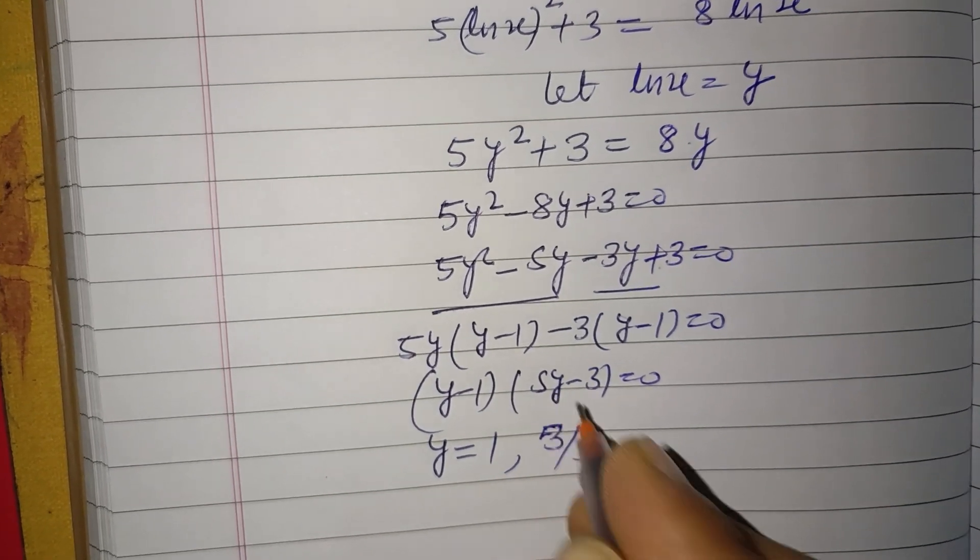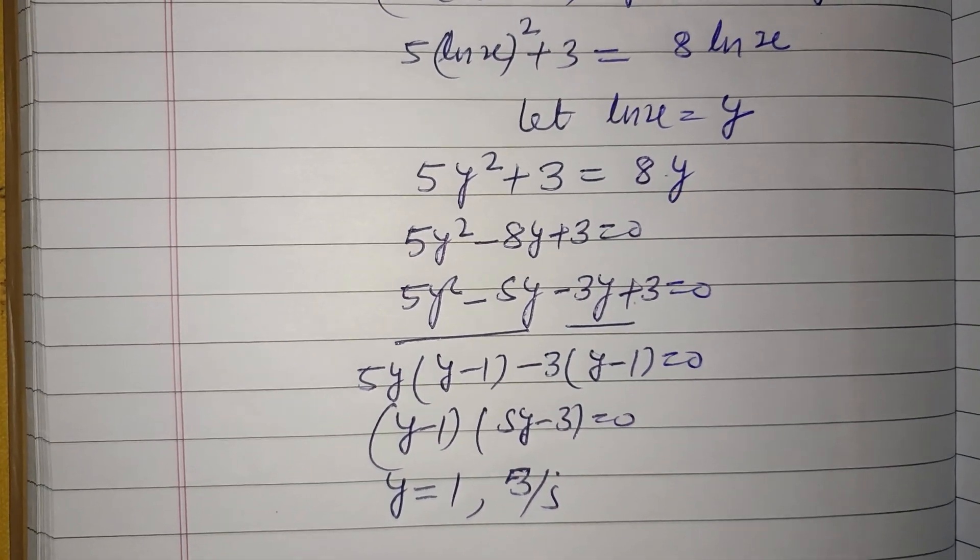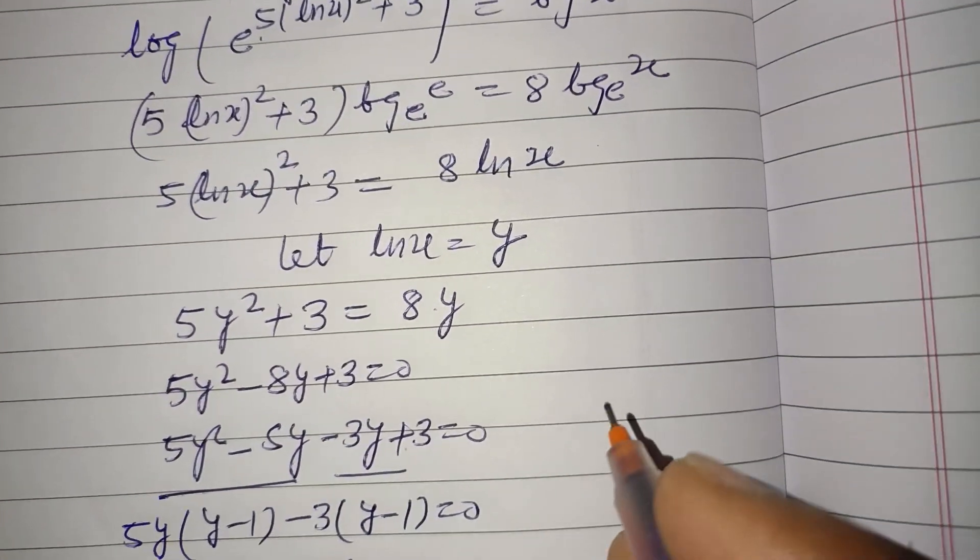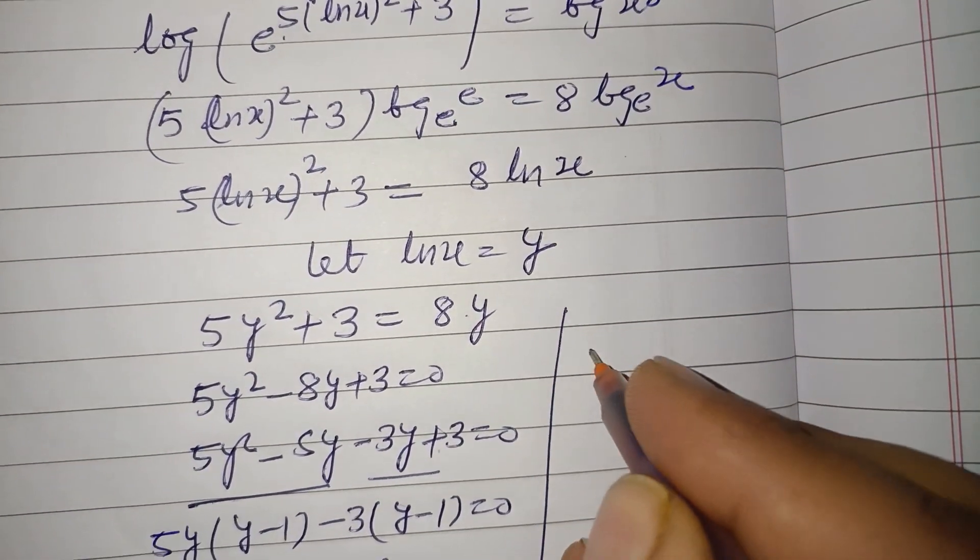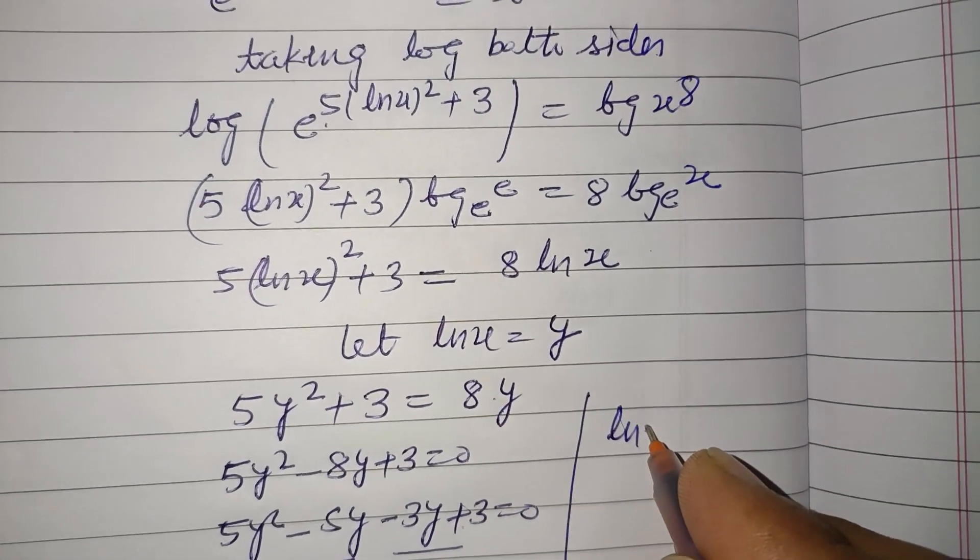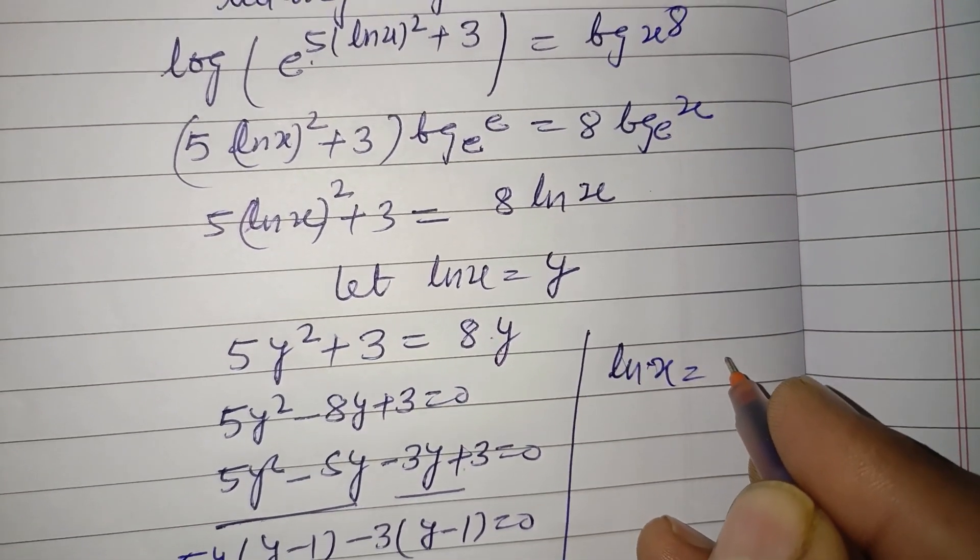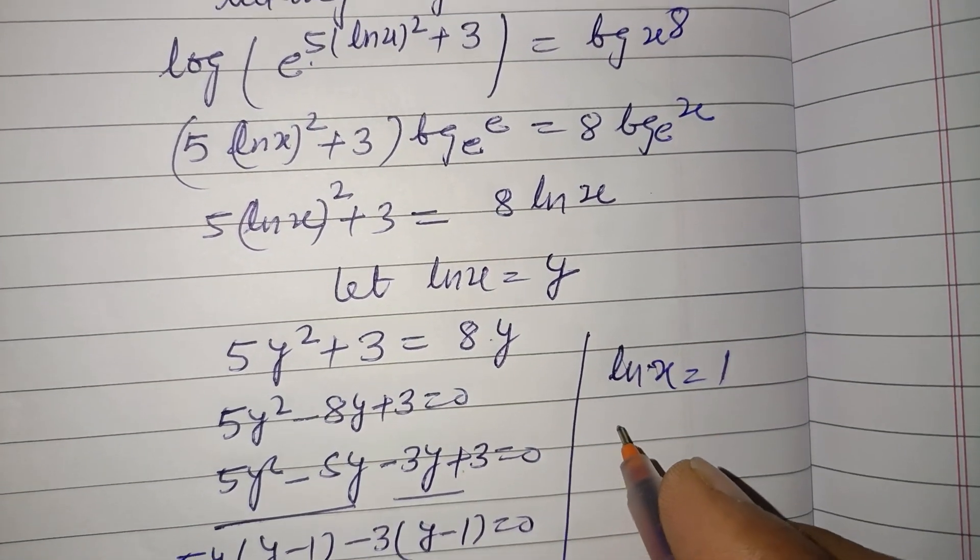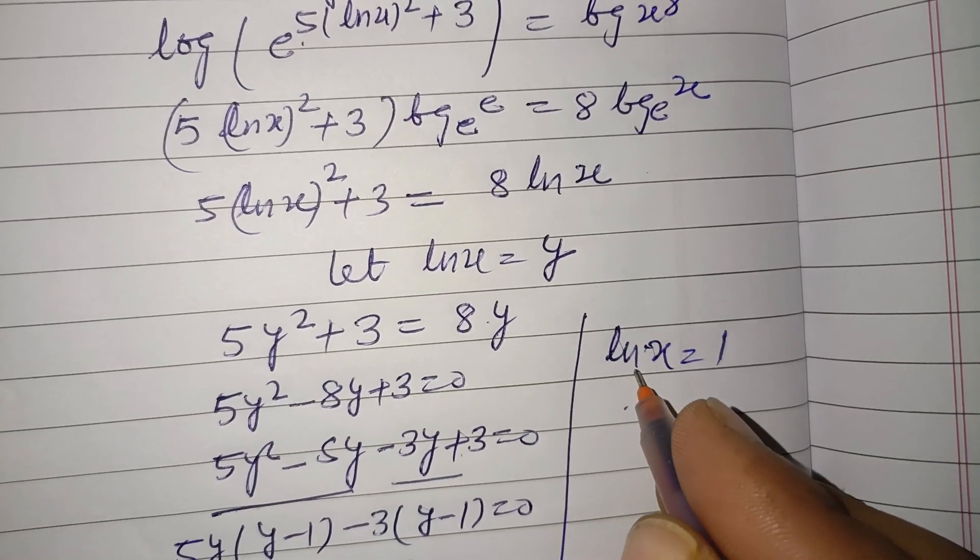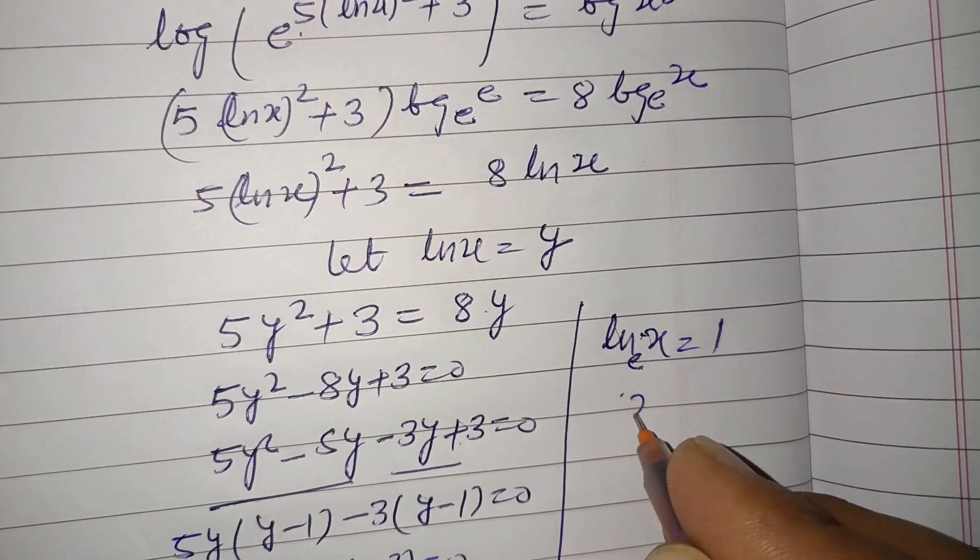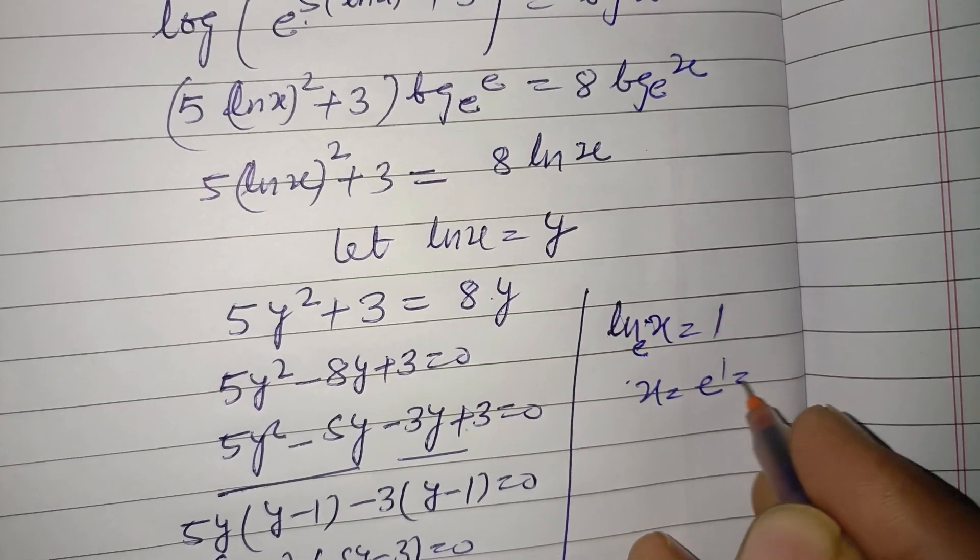If we got y equals 1 and 3/5, then ln x equals 1. So this is base e, x equals e to the power 1, or e.